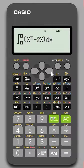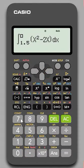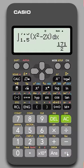We put in the values from 1.5 to 7.5, and it quickly gives you the value of that integration: 171 over 2. If you would like to find out in decimal format, push this SD button.